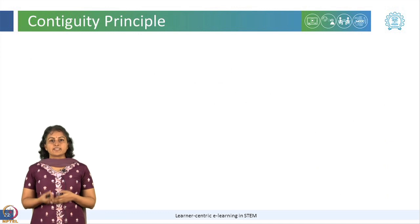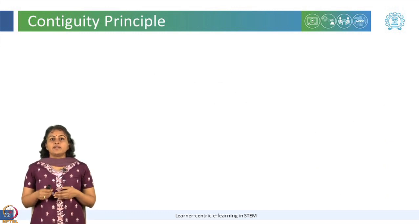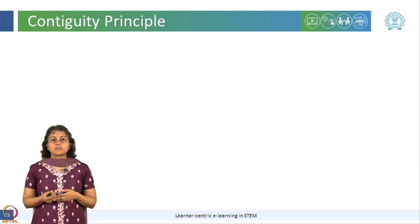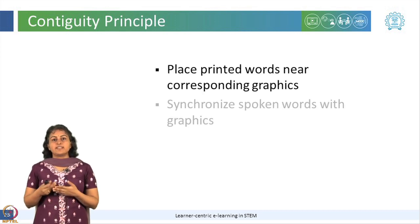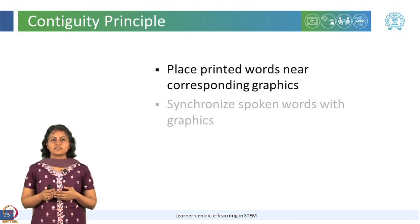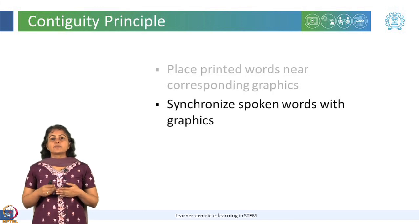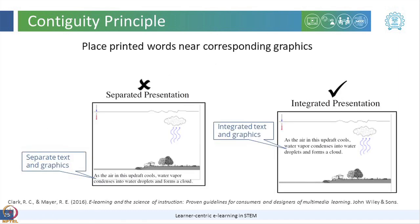We now come to the next multimedia principle, which is the contiguity principle. Contiguity principle has two parts: one, place printed words next to the corresponding graphics, and two, synchronize spoken words with graphics. By integrating text and graphics, we can ensure that the learner does not have to search which part of the graphics corresponds to which words in the content.